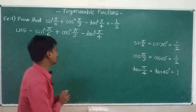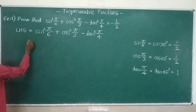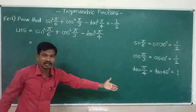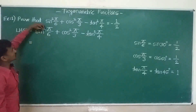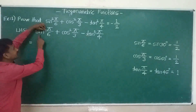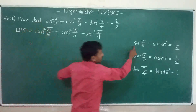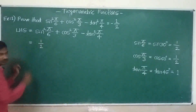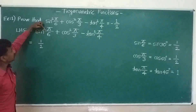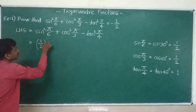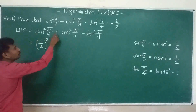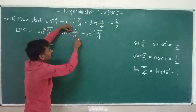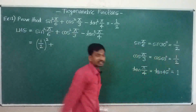By using table values, LHS is equal to: substitute these values in. Sin squared — sin pi divided by 6 value is 1 divided by 2, so it is (1/2) squared. Plus, cos squared — cos pi divided by 3 value is 1 divided by 2, so it is (1/2) squared.